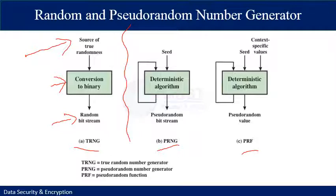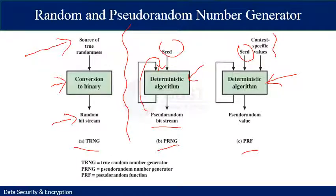Both the PRNG and PRF use a deterministic algorithm. A seed value is fed to the deterministic algorithm, which produces a pseudo-random bit stream; the seed is then incremented to produce the next pseudo-random bit stream. In the pseudo-random function, the seed is complemented with context-specific values related to the application, process, or user identification, and is fed to the deterministic algorithm to produce a pseudo-random value.